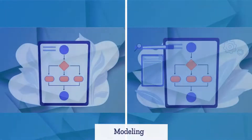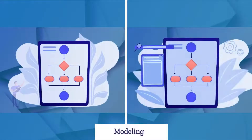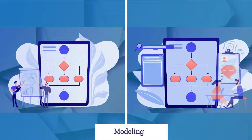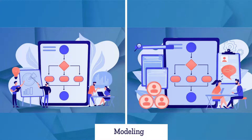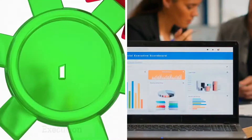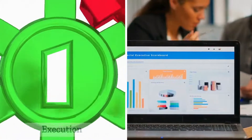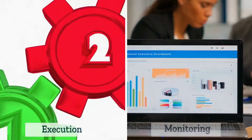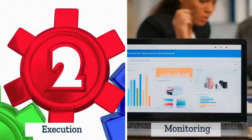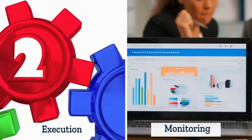Modeling — taking the design from its theoretical to its digital form so it can be verified, tested, corrected, and made ready for execution. Execution — running the business process model in its real-life scenarios.